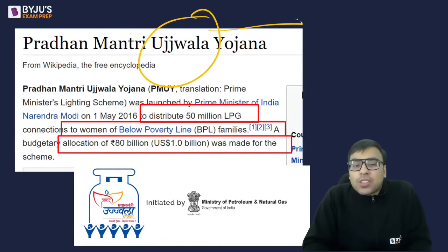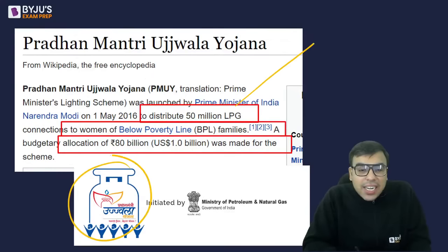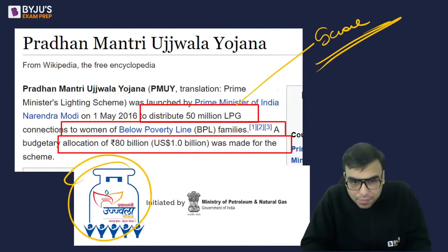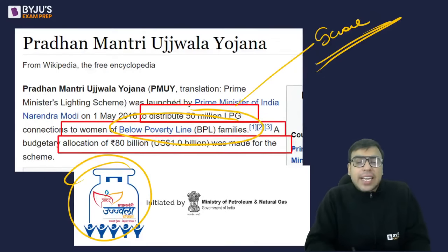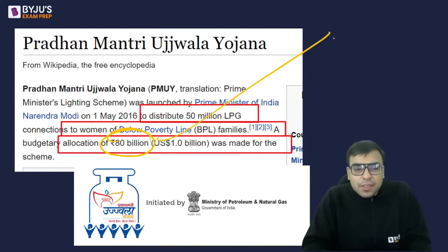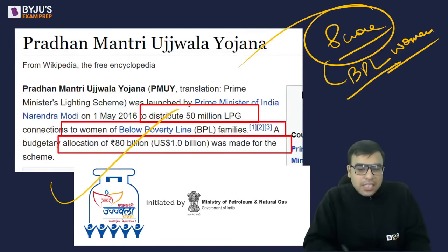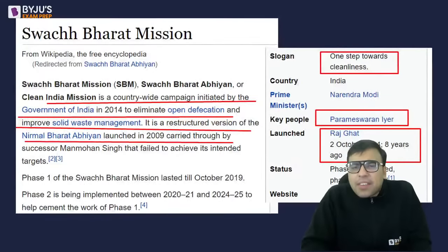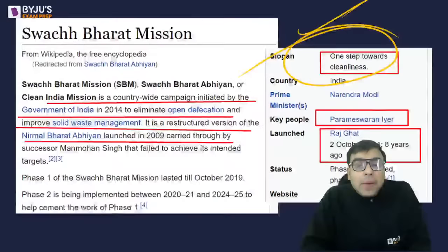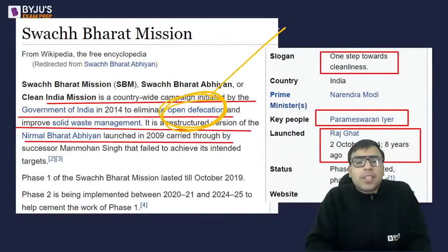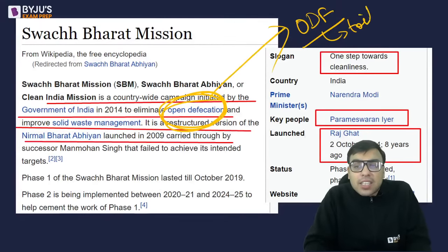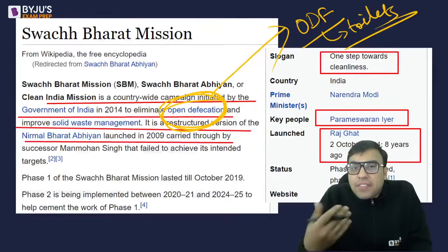Pradhan Mantri Ujjwala Yojana provides LPG cylinders to women from below poverty line (BPL) households. Initially targeted at 5 crore women, this was later increased to 8 crore. The goal is to provide 8 crore BPL women with LPG cylinders. Swachh Bharat Mission is about ensuring cleanliness and making India Open Defecation Free (ODF) — meaning everyone should use toilets instead of defecating in the open.